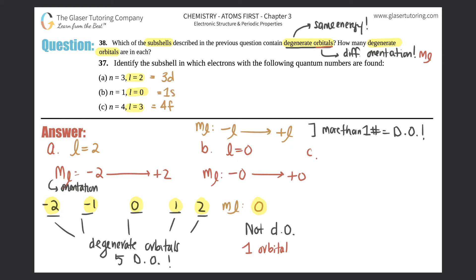Last but not least, l equals three. So l equals three. ml is always negative l to positive l, so this would be negative three all the way to positive three.